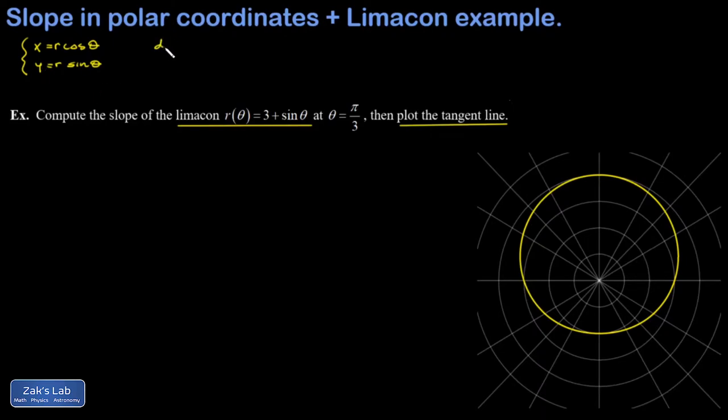We're looking for slope, which I could write as dy dx. Then I could divide by d theta in the numerator and denominator. So this gives me dy d theta divided by dx d theta. And I refer back to my polar form of x and y. This is more complicated than it might look at first, because r is definitely a function of theta.